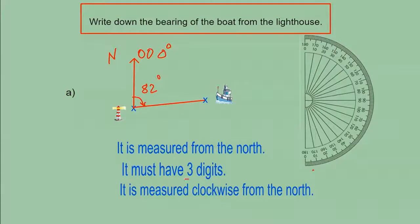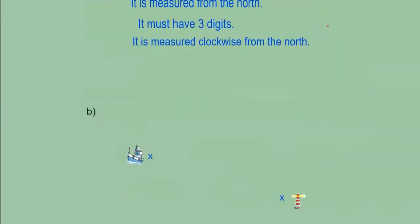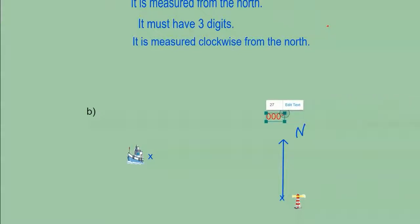It says bearings must have three digits and we only have two digits, so we're going to add a zero, making it three digits: 082. For the next example, we're going to measure the bearings again of the boat from the lighthouse. The lighthouse is the north, so we start measuring the bearing from there at zero degrees.